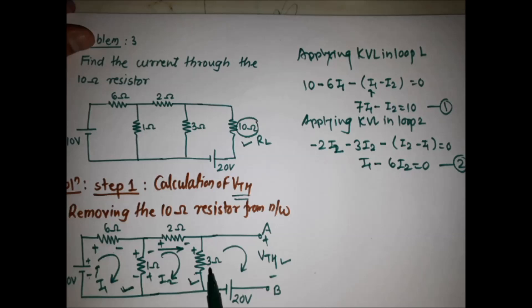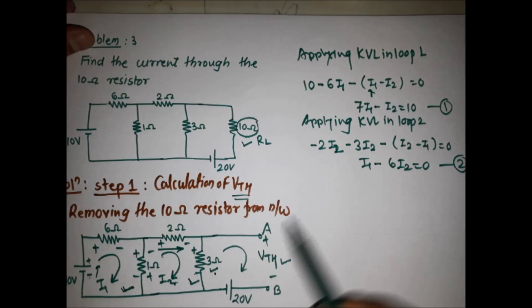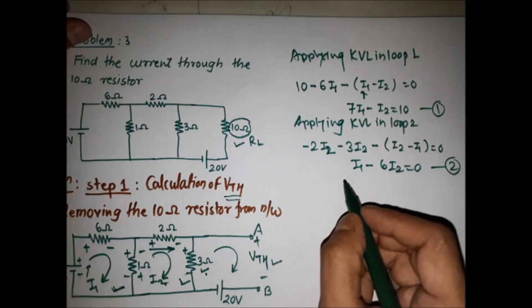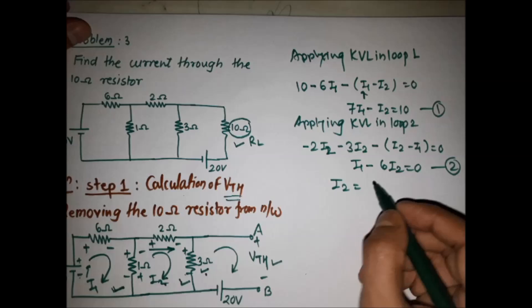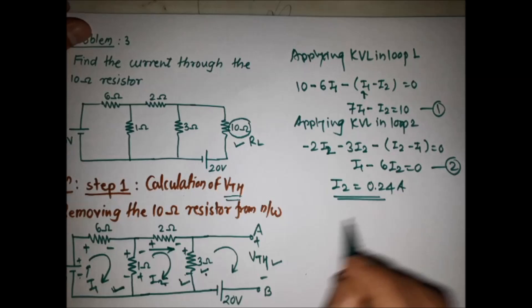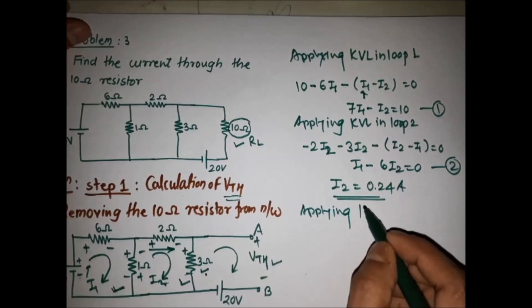For finding VTH, we need only the current flowing through the 3 ohm resistor, which is I2. Solving equations 1 and 2 simultaneously, we get the value of I2 = 0.24 ampere.